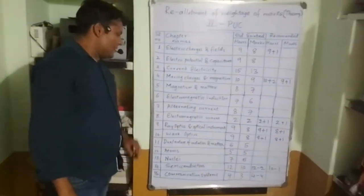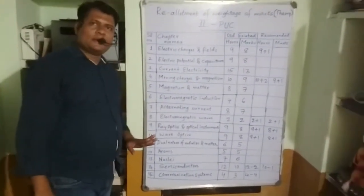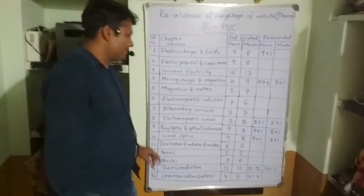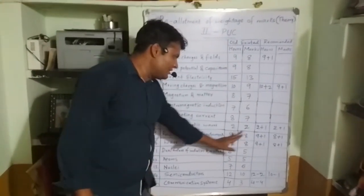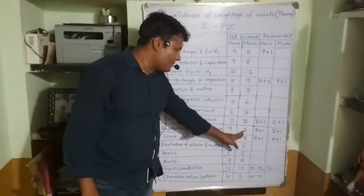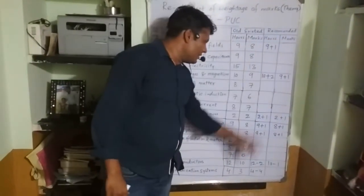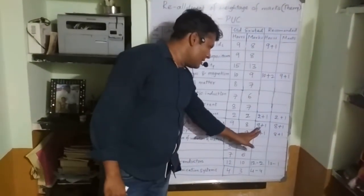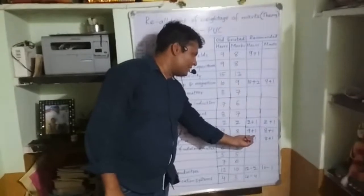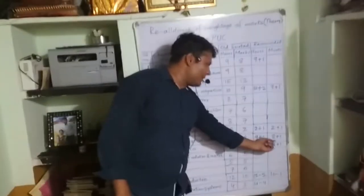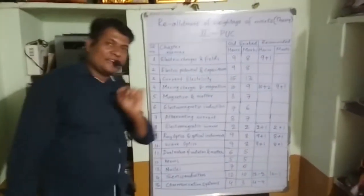For the ninth chapter, Ray Optics and Optical Instruments, the old section shows nine hours of teaching and eight marks. In the recommended section, nine plus one teaching hours and eight plus one marks weightage have been assigned for this chapter.